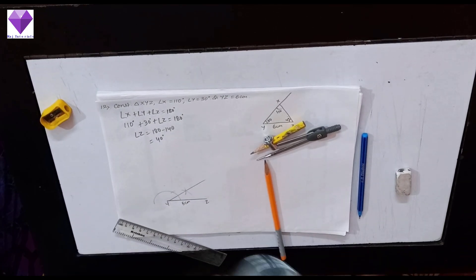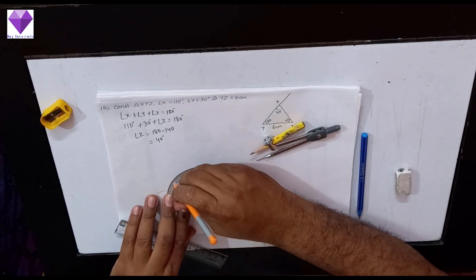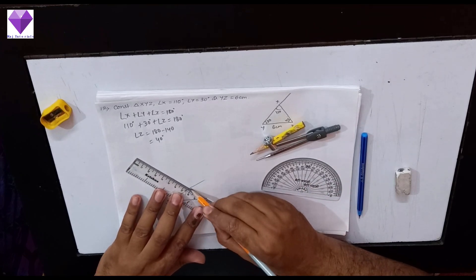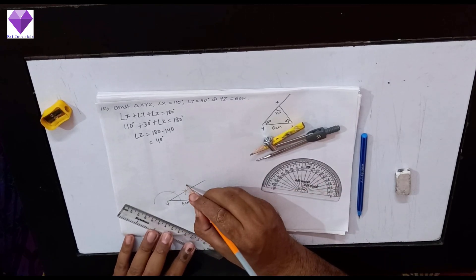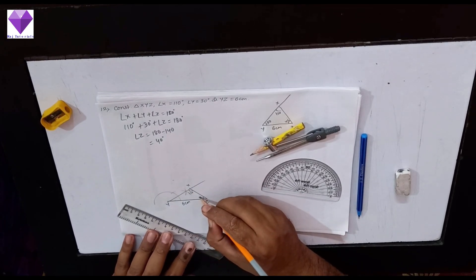40 degree angle, I will be marking on the protractor. Now I will be joining these two marks to get my 40 degrees, so the third point I will get as 110 degrees. That will be Z. Thank you.